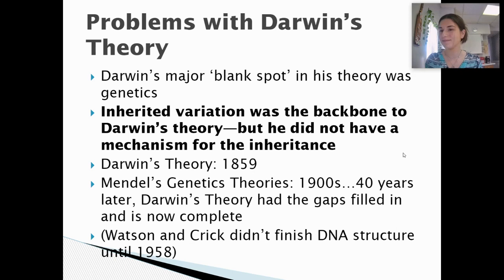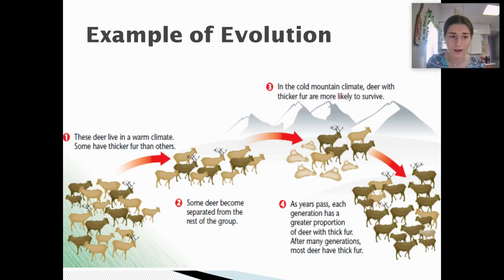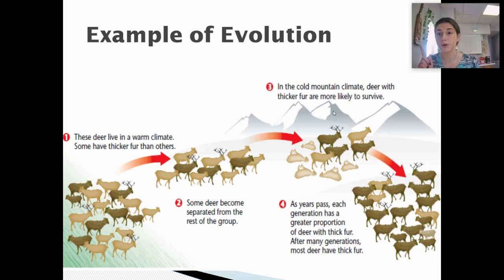Here's an example to help you visualize. We start with deer that live in a warm climate — some have thicker fur than others. The darker brown ones have thicker fur than the lighter brown ones. Then some deer become separated from the rest of the group. In the cold mountain climate, deer with thicker fur are more likely to survive, and because it got really cold, the deer without thick coats die.